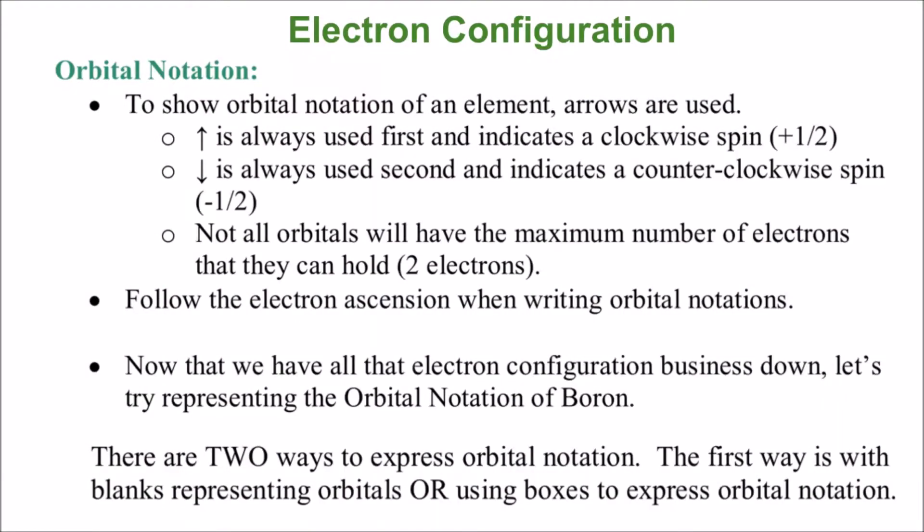Welcome back to our series on electron configuration. The next type of electron configuration we're going to talk about is orbital notation. Orbital notation gives all the same information as electron configuration does, except it accentuates how many electrons go in an orbital within an energy level for a specific element. Here's how it works.